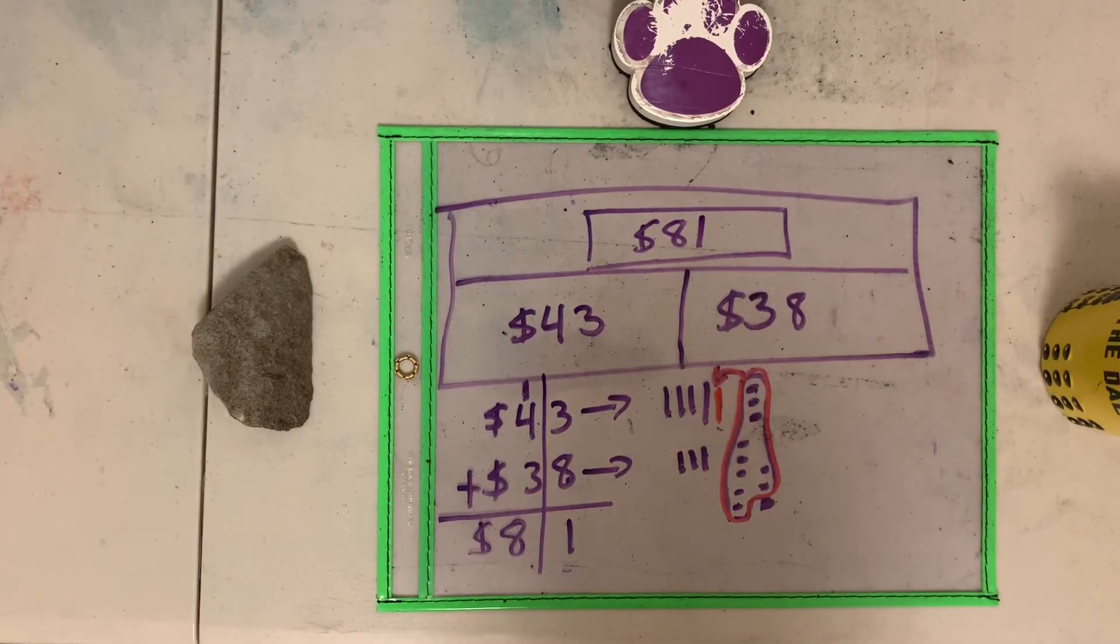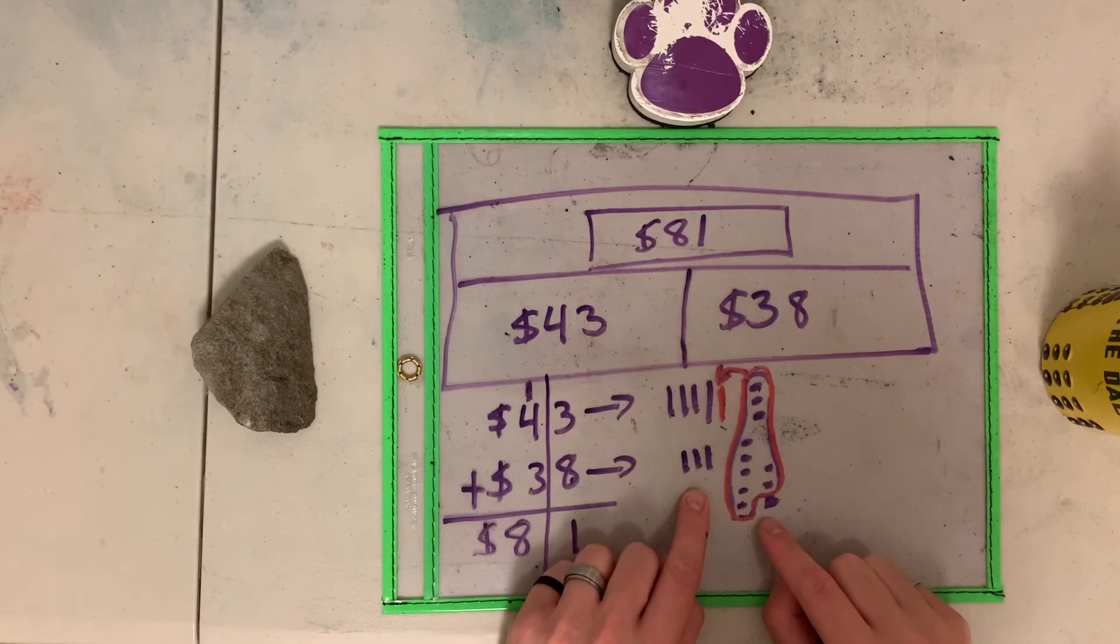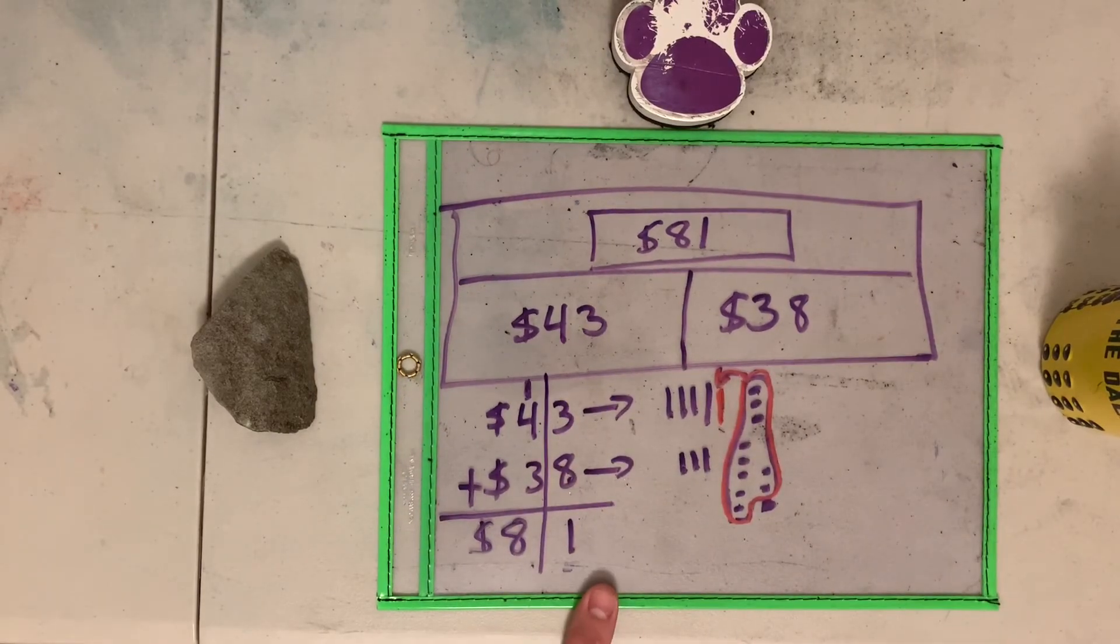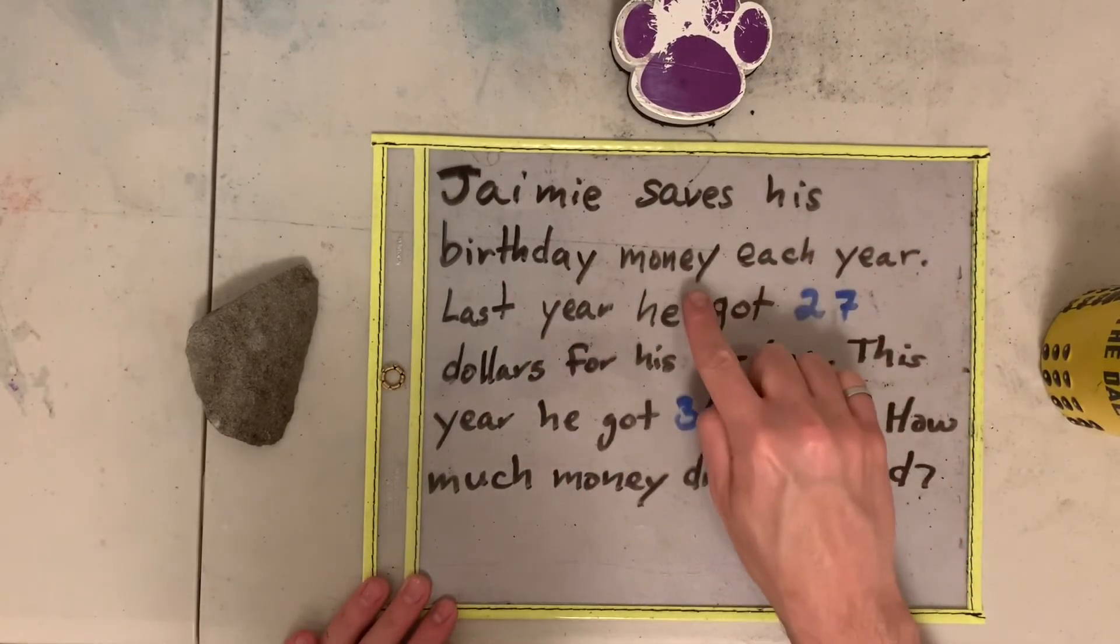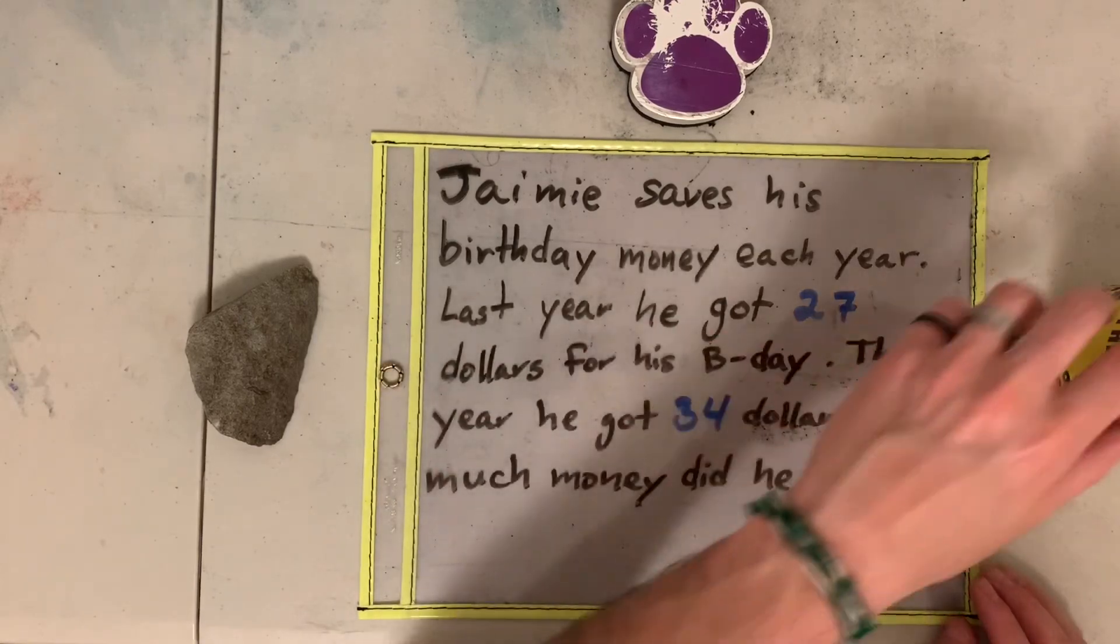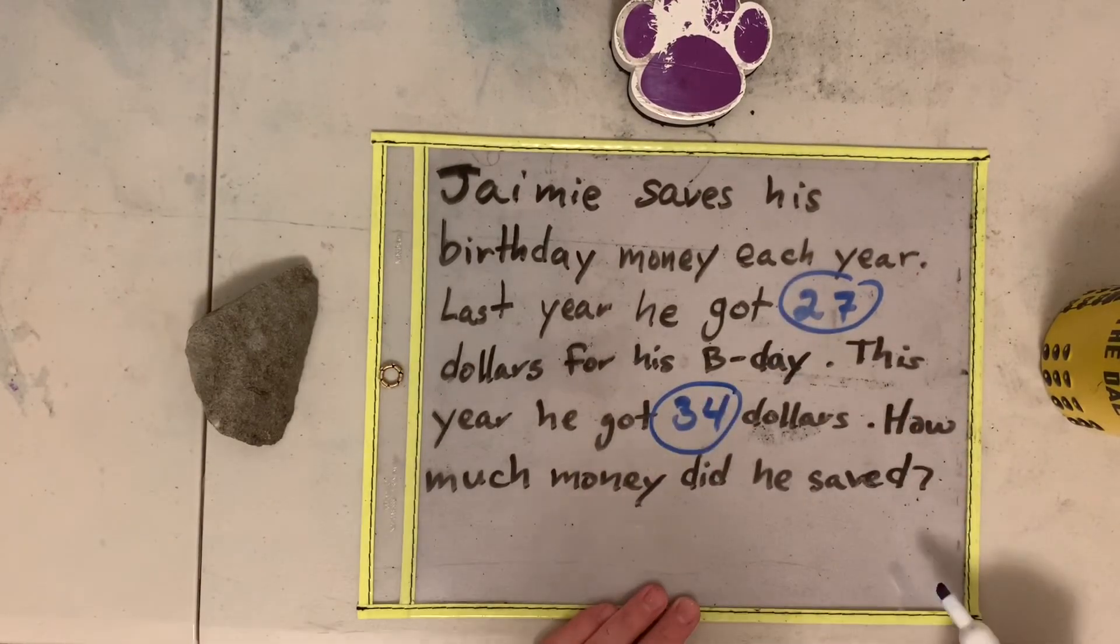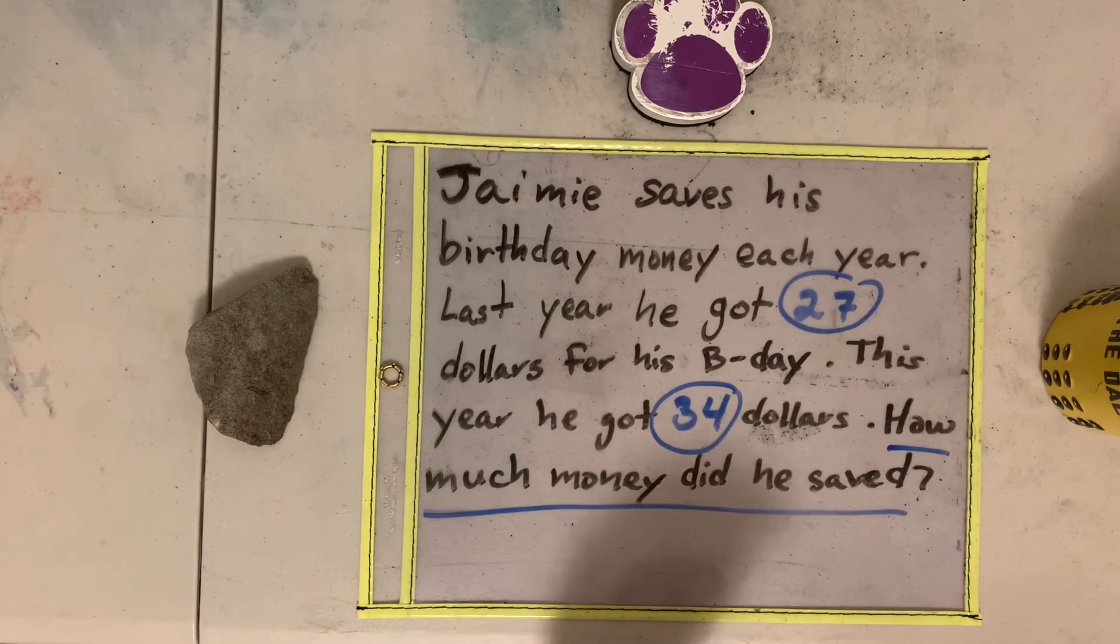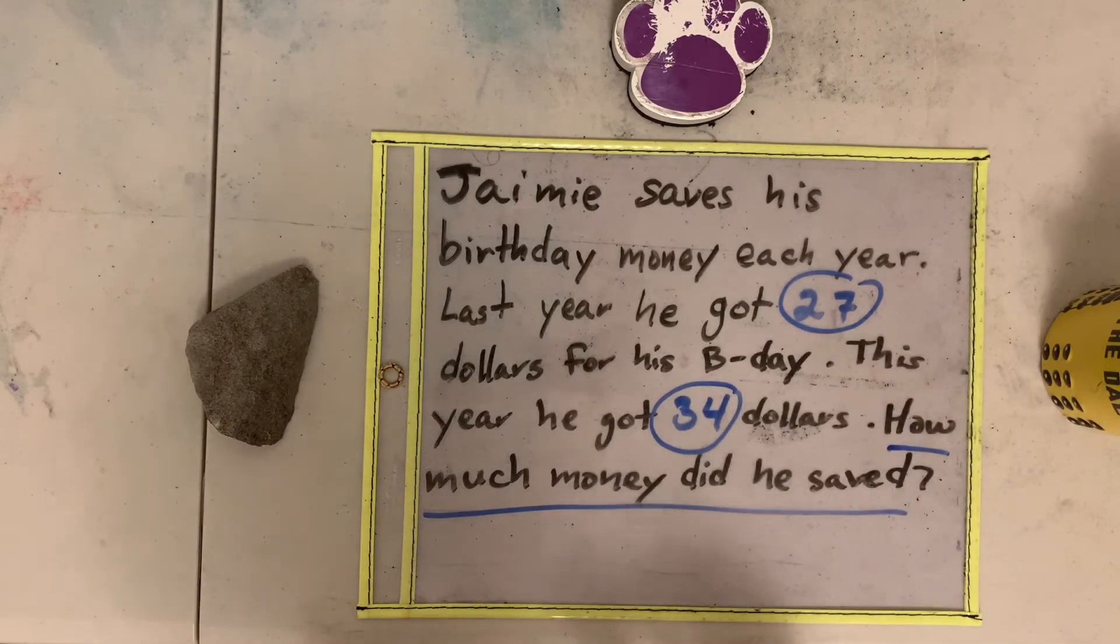You're doing the same word problem with a part, part, whole. And I want you to do a strategy. It could be base ten block or expanded form strategy, whichever you prefer. But you're going to do the strategy with this word problem. Jamie saved his birthday money each year. Last year he got $27 for his birthday. This year he got $34. How much money did he save? So this is the word you're going to do today. Just like the one that I did earlier, you're doing the same thing with this word problem. I hope to see you work hard and I'll see you tomorrow. Bye guys.